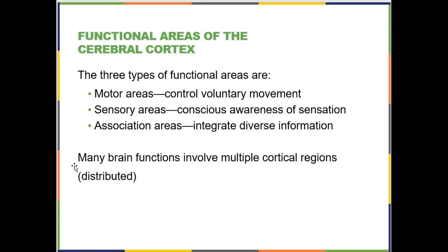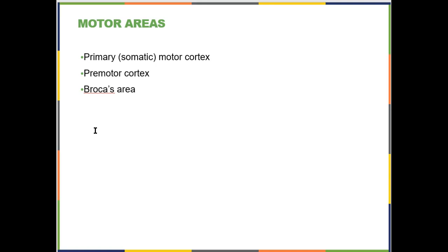We are going to go over different kinds of regions of the cerebral cortex: motor areas, sensory areas, and association areas. The way we cover the brain oversimplifies it and makes it sound like each part is responsible for doing one thing. There is a lot of delegation of tasks that are location-specific, but consciousness, complex thoughts and emotions — the things that make us human — are much more distributed across multiple parts of the brain working together. We're going to go over three motor areas: your primary motor cortex, your premotor cortex, and Broca's area.